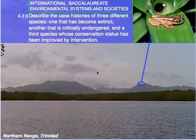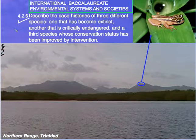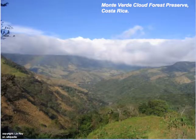Welcome again. In today's lesson, we consider topic 4.2.6: describe the case histories of three different species — one that has become extinct, another that is critically endangered, and a third whose conservation status has been improved by intervention. The Monte Verde Cloud Forest Preserve, Costa Rica.